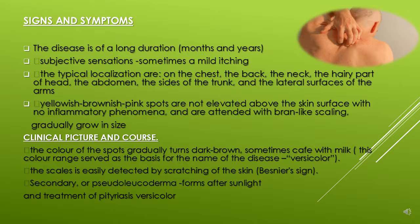The clinical picture and course: the color of the spots gradually turns to dark brown, or sometimes to café-au-lait. The color range serves as the basis for the name 'versicolor,' meaning the gradual change in color of these spots — first yellowish, brownish, pink, and then darker brown or café-au-lait.